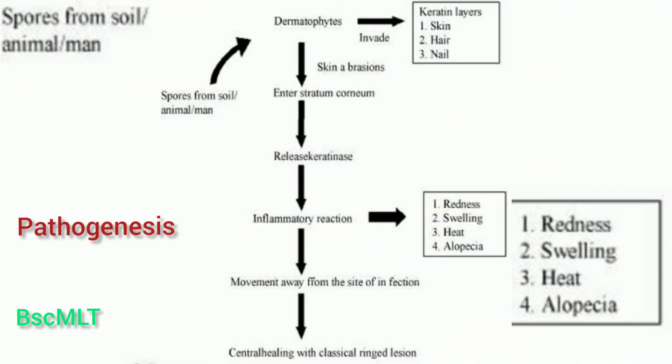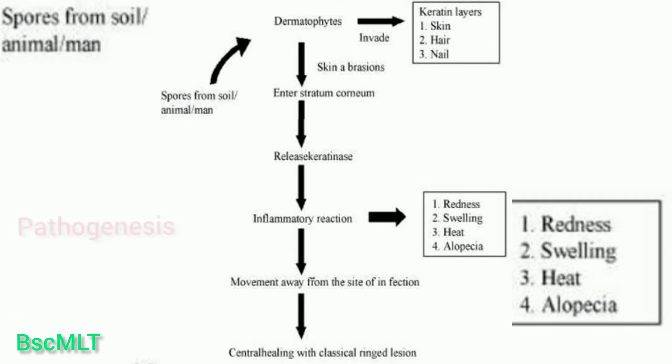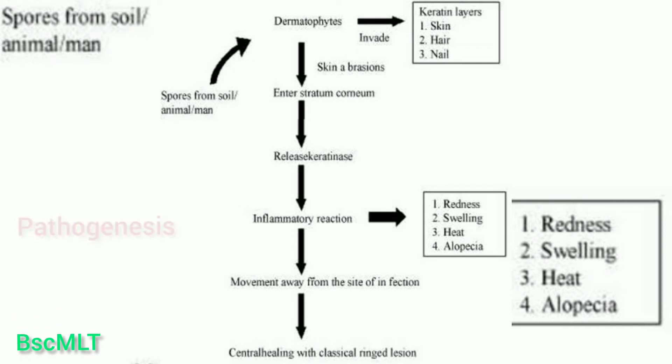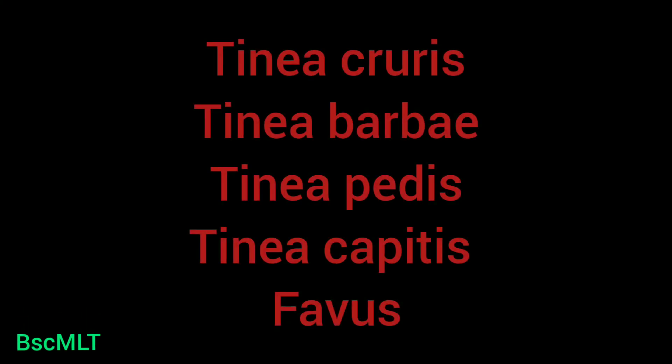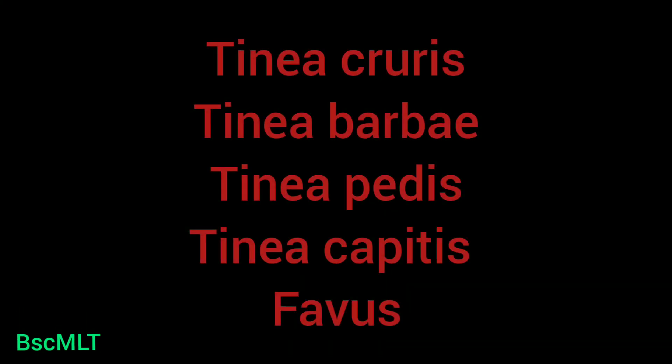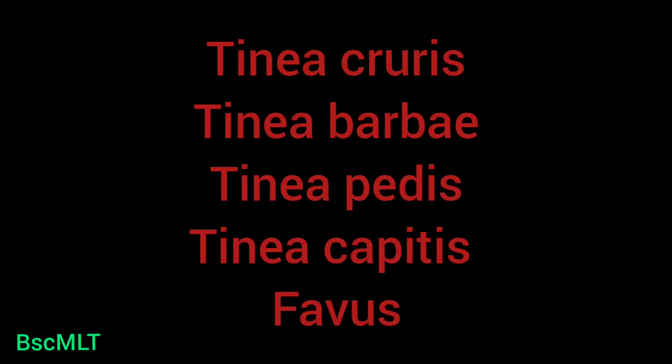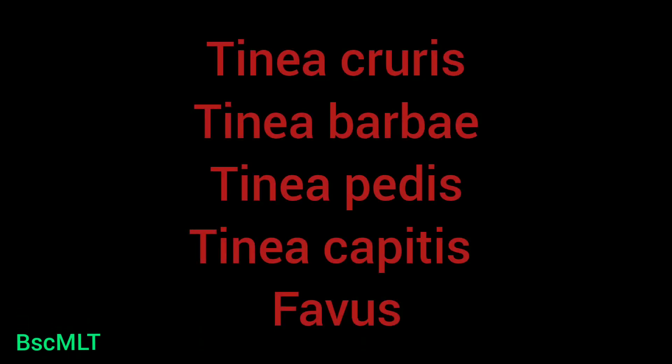Pathogenicity: dermatophytes grow only on the keratinized layers of the skin. The diseases caused include tinea cruris — affecting the groin and perineal area; tinea barbae — affecting the beard area of the face and neck; tinea pedis — athlete's foot; and tinea capitis — ringworm of the scalp.